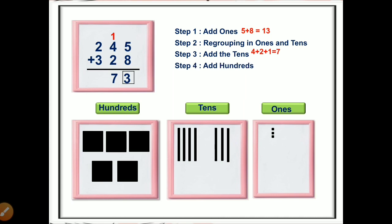Our final step is to add the hundreds place. The numbers in the hundreds position are 3 and 2. Three plus two equals 5. There are five blocks in the hundreds place, so we write 5 here. 573 is our answer when we add 245 with 328.